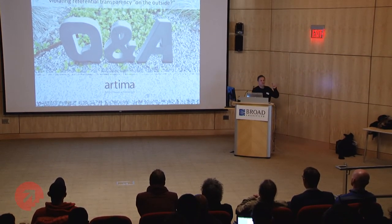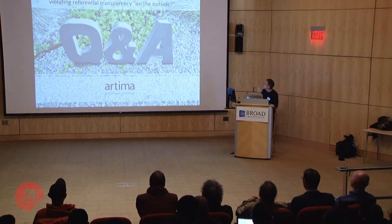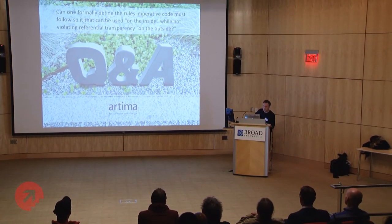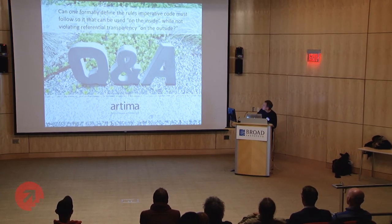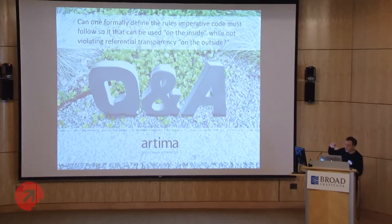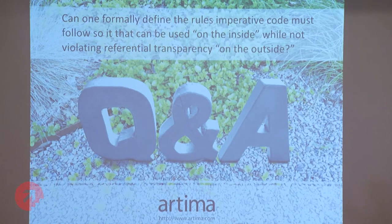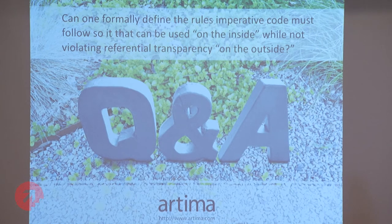For Q&A I have just one minute left and I want to ask you a question. What I'm trying to figure out is how to formally define the rules that imperative code has to follow such that it can be referentially transparent from the outside even though there's mutation happening on the inside. There are some things you can't do — you probably can't have side effects that do IO or something unpredictable. But I don't know how to formally specify or describe what that is. If someone has ideas about that or knows of papers, come talk to me.